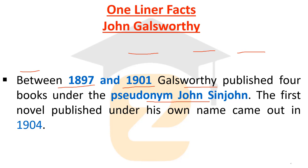From 1897 to 1901, four important books were published under his pen name John St. John. The first novel published under his own name — John Galsworthy — came out in the year 1904.